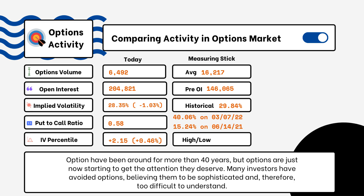We've provided details on today's option activity. You'll be able to see options volume, open interest, implied volatility, put-to-call ratio, and IV percentile. One of the most popular indicators for traders is the put-to-call ratio. A reading above 1 indicates more bearish sentiment, while a reading of 0.5 or 0.7 tells us it's more bullish — indicating more calls are being purchased rather than puts.